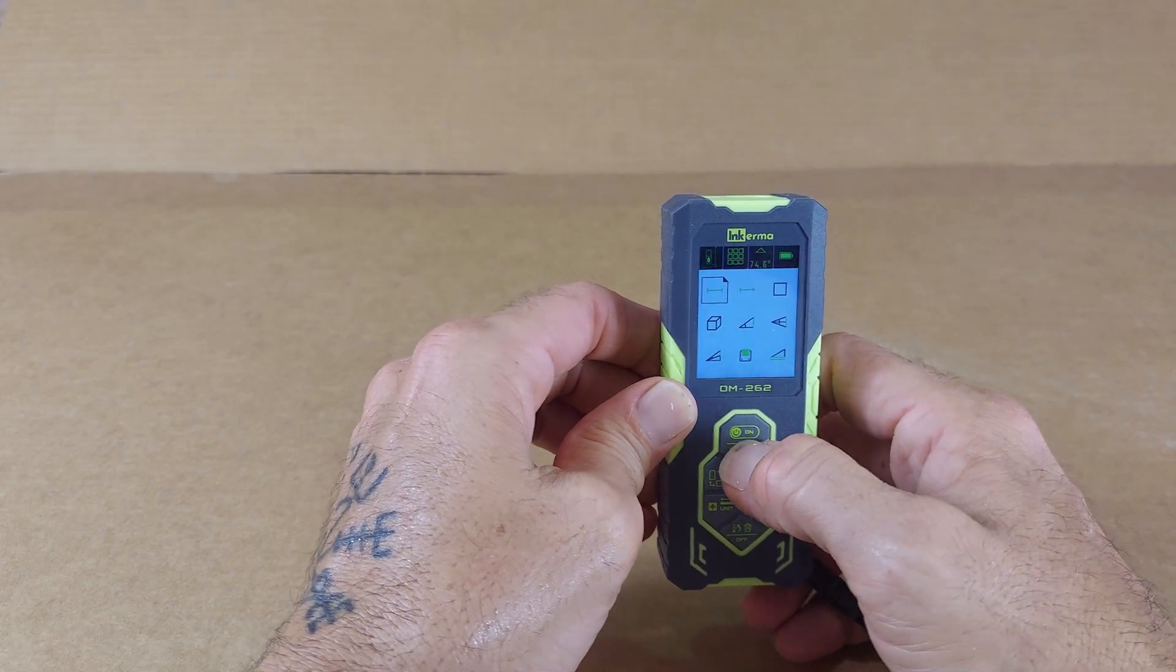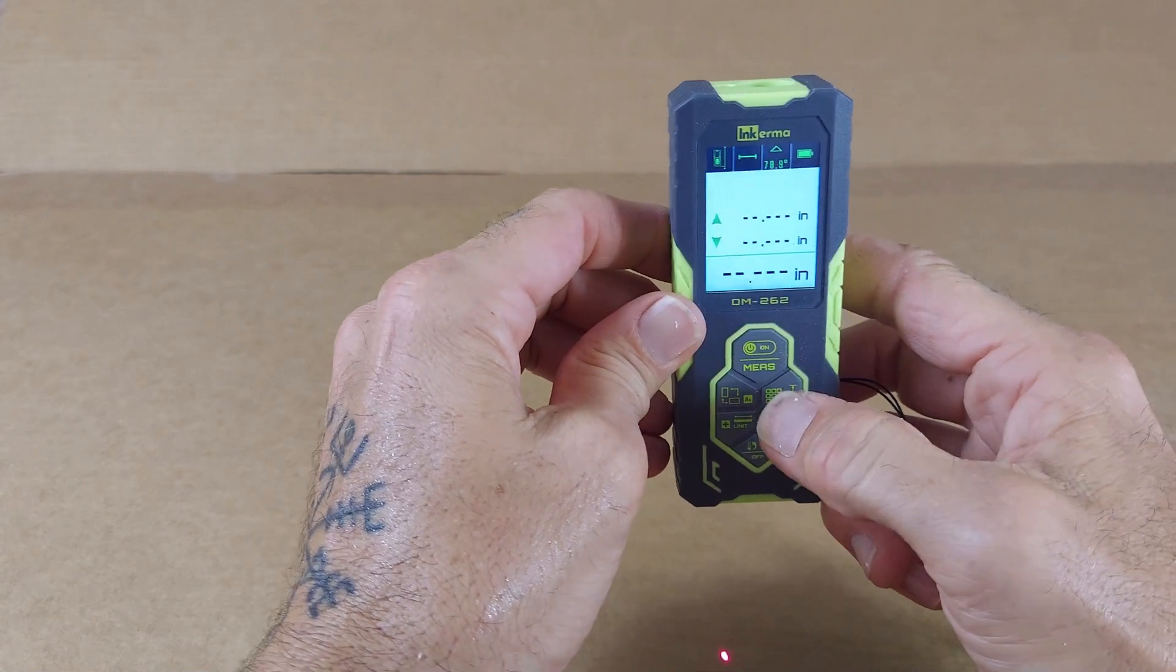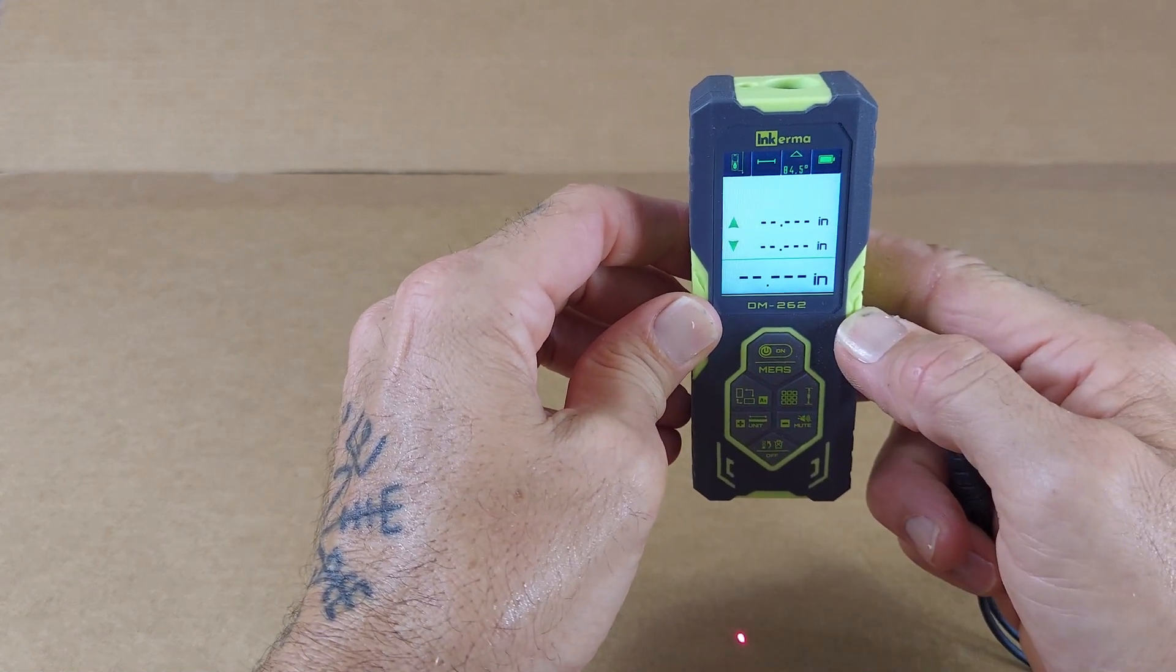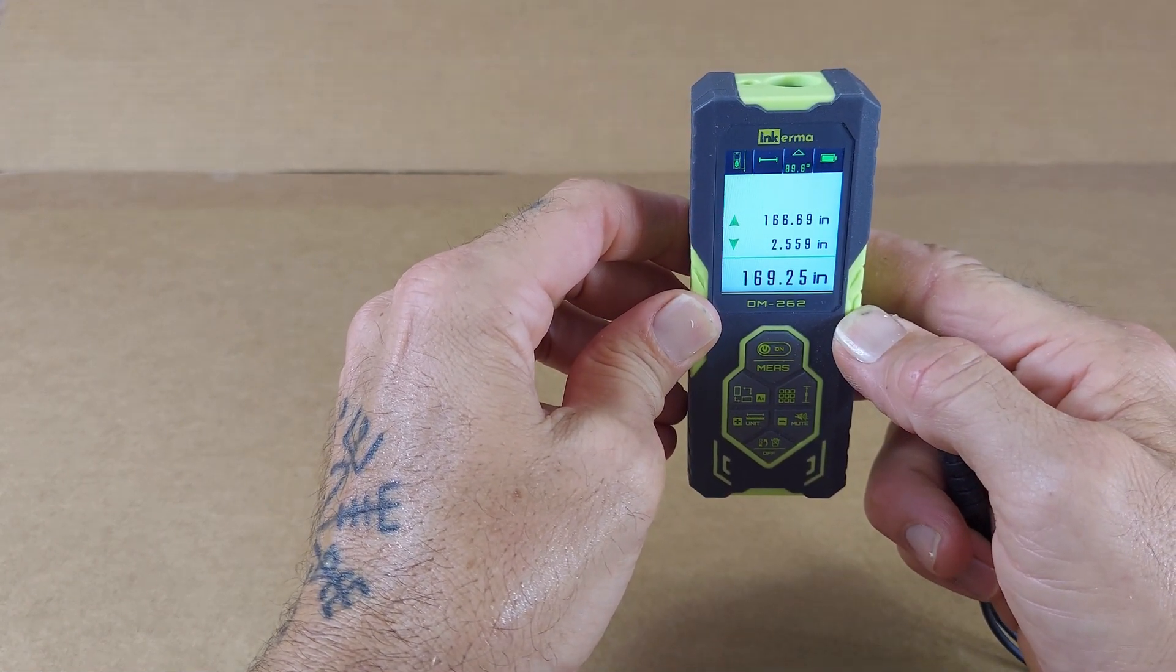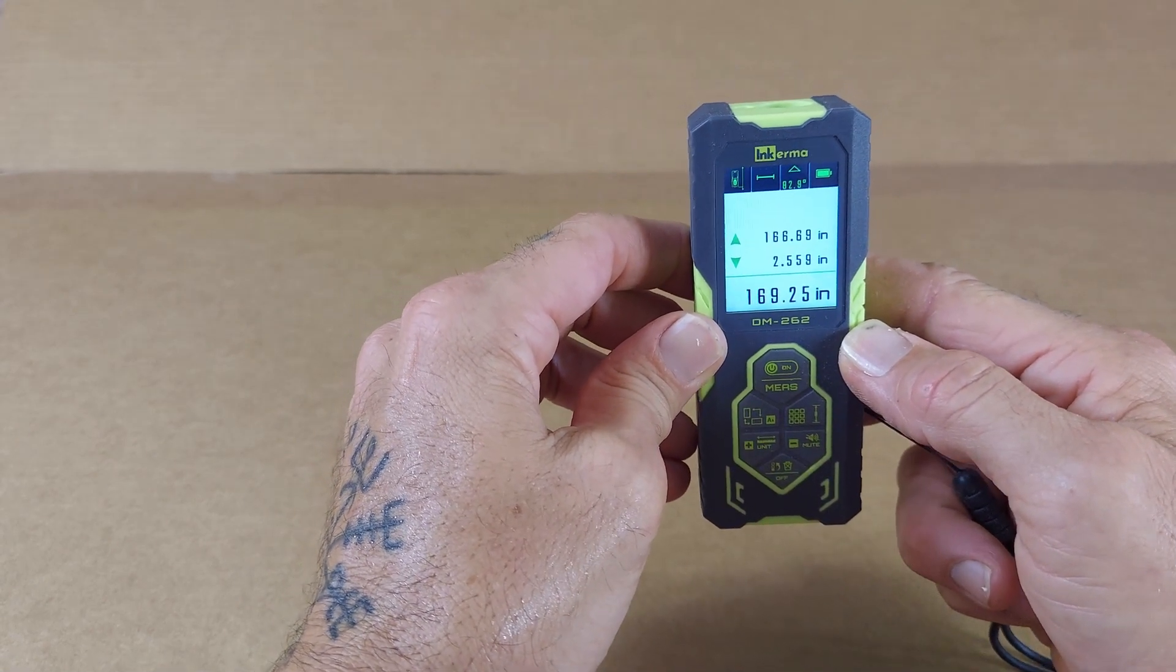You can see we'll measure off the tabletop to the ceiling and it's 14 feet. It's accurate up to an eighth of an inch which is fantastic.